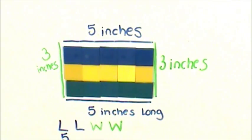This was 5, this was also 5 because the opposite lengths of a rectangle are the same length. This was 3 inches, and this was 3 inches.